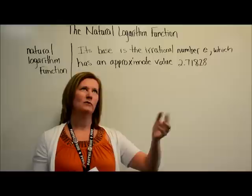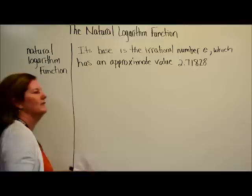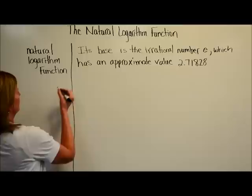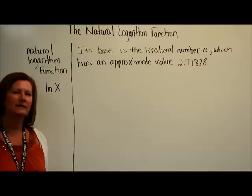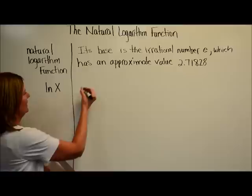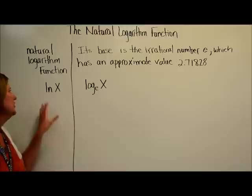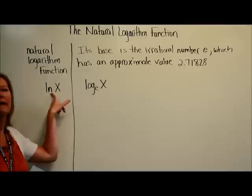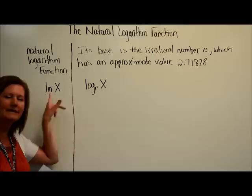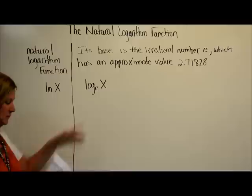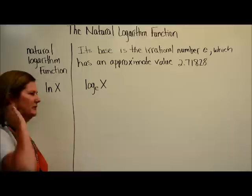Everything is base E now. Before we had base 10, base 2, base 3, base 4 — this time it's base E. Everything works the same; it just has a base E and looks a little different. You're going to see something written as ln of x, and ln of x is just a shortened term for log base E of x. These two are the same — it's just a log base E. Just like if you see log with no base, you know you have base 10.